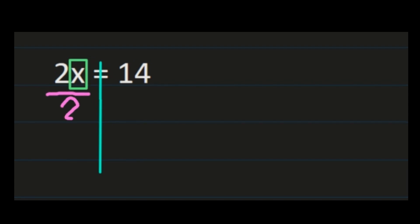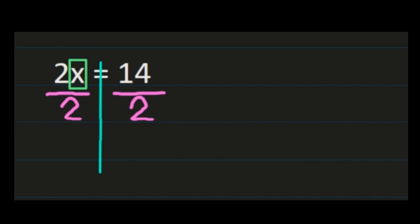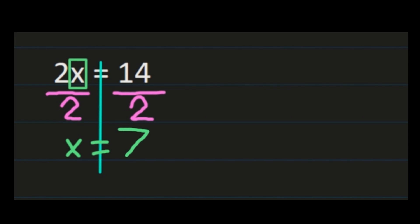The inverse operation of multiplication is division, so we're going to divide both sides by 2. Instead of using a division sign, we'll use a line to set this up like a fraction — because a fraction is just division. Dividing the left side by 2 leaves x, since 2 divided by 2 is 1. On the right, 14 divided by 2 is 7. So x equals 7, and notice that I kept my equal sign lined up.